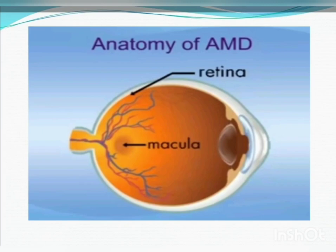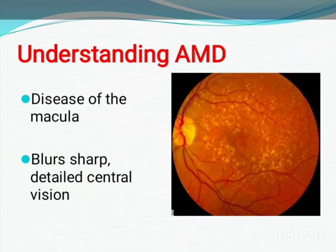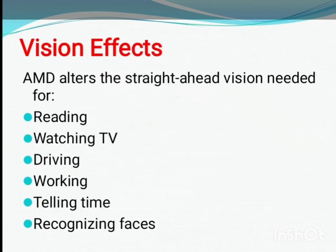Before discussing the details of AMD, it is important to understand some anatomy of the eye. The figure shows the side view of a normal eye. At the back of the eye is a thin, light-sensitive tissue called the retina. The retina receives light, forms images, and sends those images to the brain, enabling us to see. At the center of the retina is the macula. The macula processes our central vision and enables us to see details and colors. Sensitive, small, and tissue-paper thin, the macula is particularly vulnerable to deterioration.